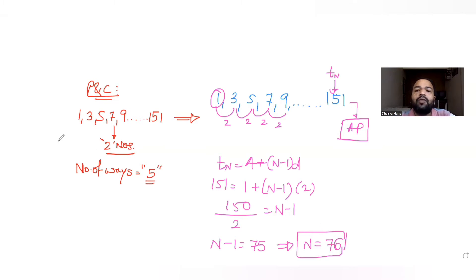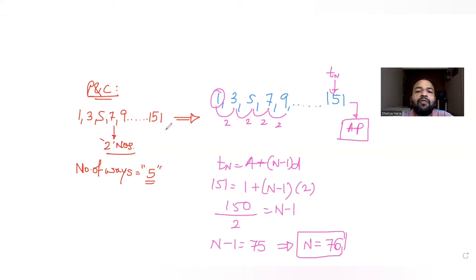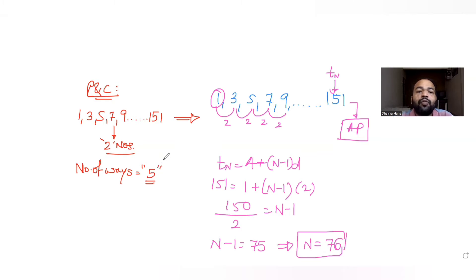So in this entire list of odd numbers from 1 to 151, there are 76 terms present — that is, 76 odd numbers. Out of these 76 odd numbers, we have to select any 2 and find the number of ways in which their product is a multiple of 5. Since there are no even numbers, we cannot get a 0 in the units place, so we need numbers ending in 5.